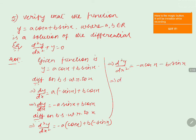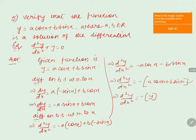From the right-hand side, taking minus as common, we get −(a·cos(x) + b·sin(x)). Since a·cos(x) + b·sin(x) = y, we can write d²y/dx² = −y. Bringing −y to the left-hand side gives d²y/dx² + y = 0.